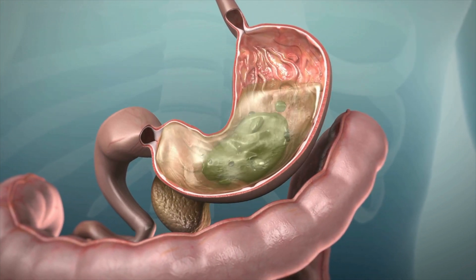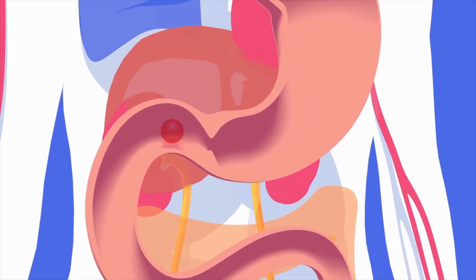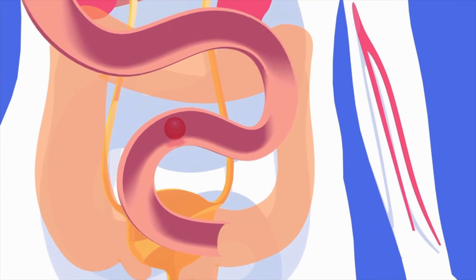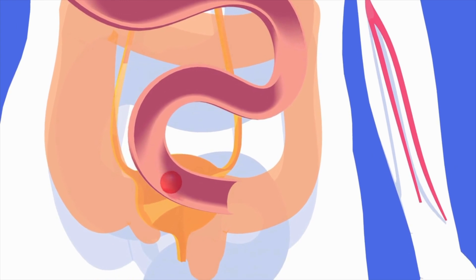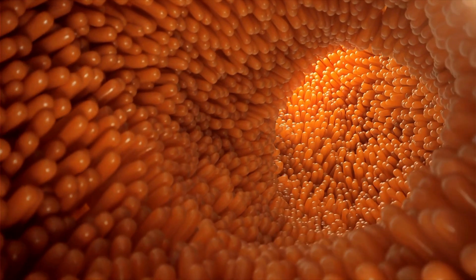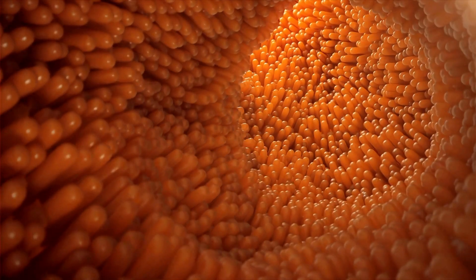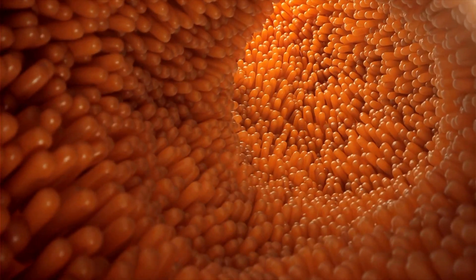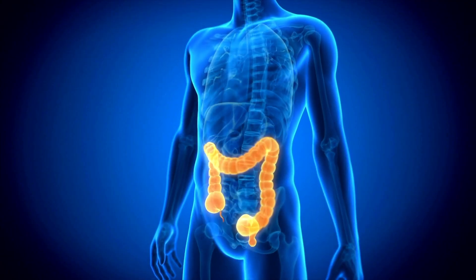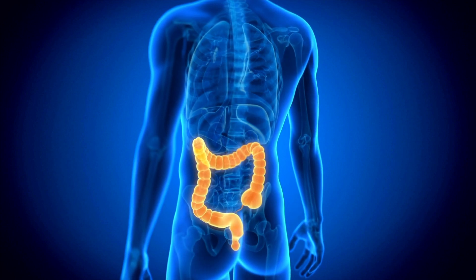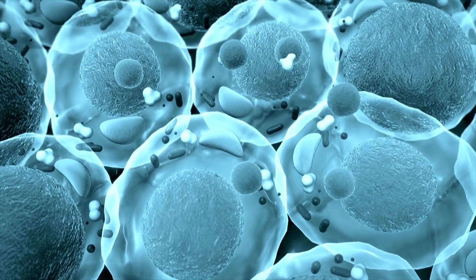This partly digested food leaves the stomach and enters the small intestine, where your body absorbs most of the nutrients from the food. Tiny finger-like structures called villi help with this absorption. What's left of the food — mainly the parts that your body can't use — moves into the large intestine, also known as the colon. This is the area that's mostly affected in ulcerative colitis. In the colon, water and some minerals are absorbed from what's left.